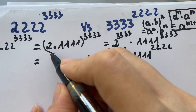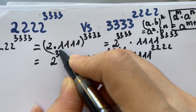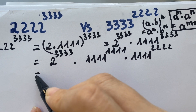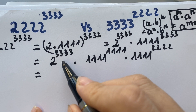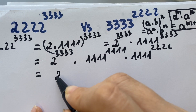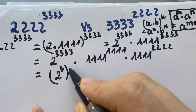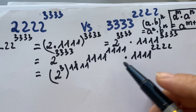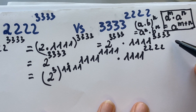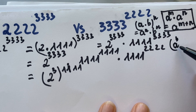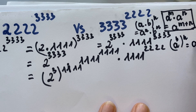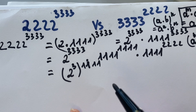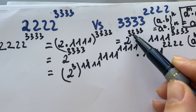Taking this down, we have 1111^1111 times 1111^1111 times 1111^1111 — that is equal to a power of 3 times n. And 3 times 1111 equals 3333.